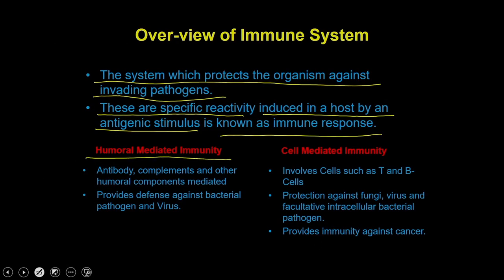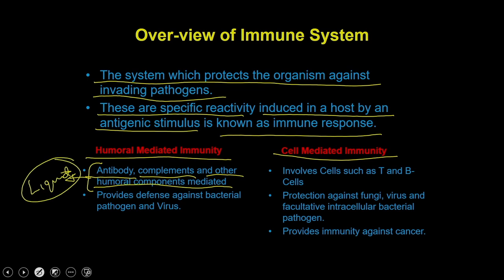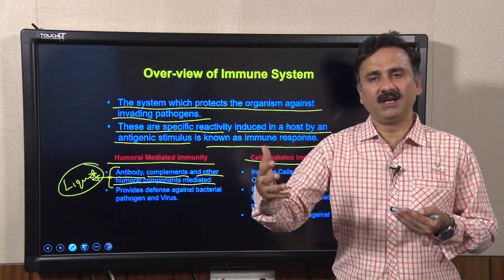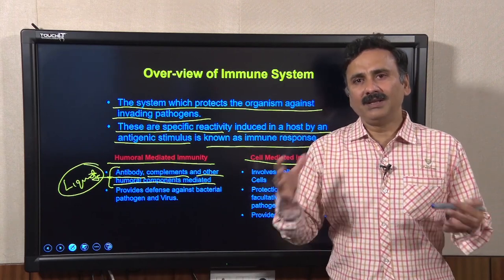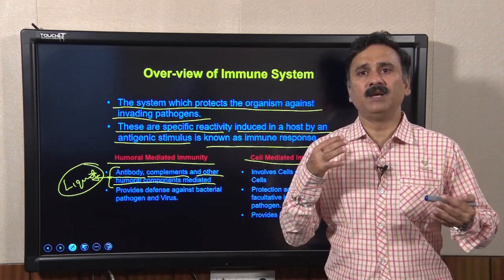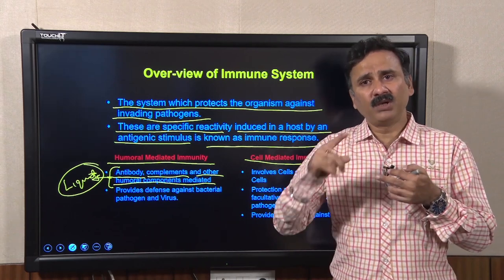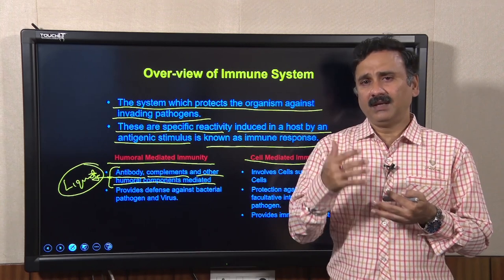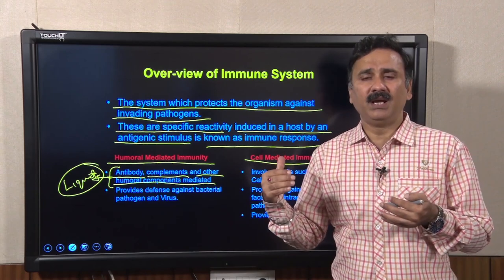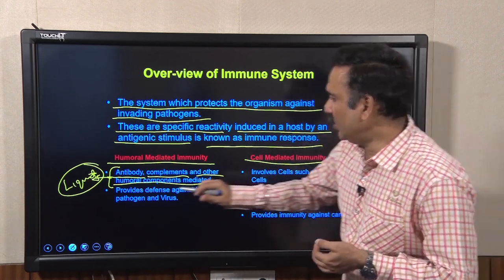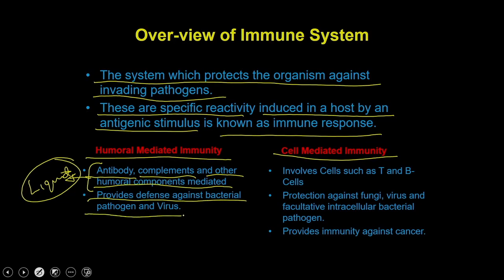Immune responses can be of two different types: humoral mediated immunity or cell mediated immunity. In humoral mediated immunity, antibodies, complement, and other humoral components mediate this type of immunity — meaning all responses mediated by liquid components. For example, cells secreting cytolytic enzymes, antibodies, and complements that circulate within the blood continuously monitor for foreign organisms. As soon as a foreign organism enters the body, these humoral responses recognize and either kill or recruit the cell mediated immune response.